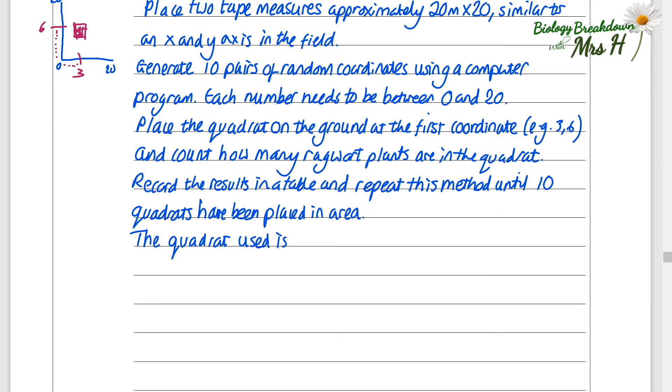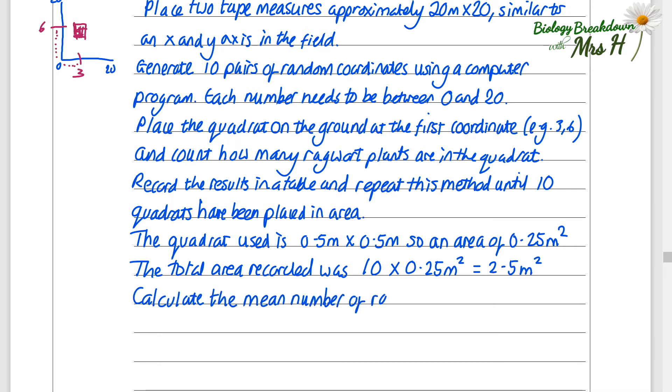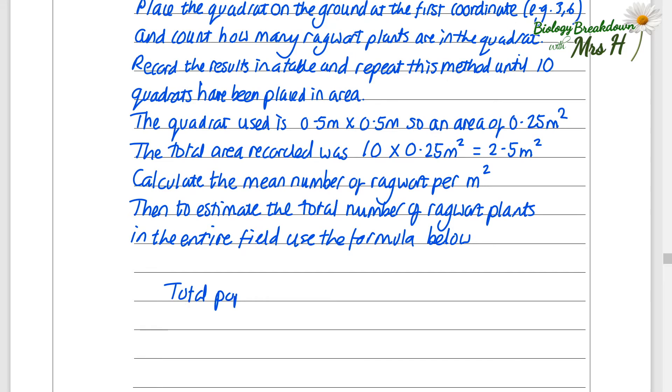The quadrat used is 0.5 meters by 0.5 meters. If one quadrat is 0.5 meter by 0.5 meters, an area of 0.25 meters squared is what you're recording. If we're doing 10 quadrats then the total area recorded will be 10 times 0.25 meters squared which is a total of 2.5 meters squared. Then what we could do is calculate the mean number of ragwort per one meter squared to estimate the total number of ragwort plants in the entire field. We could use the formula below. So the total population will be the mean number of ragwort per meter squared times the area of the field. So you're going to have to measure the area of the field.